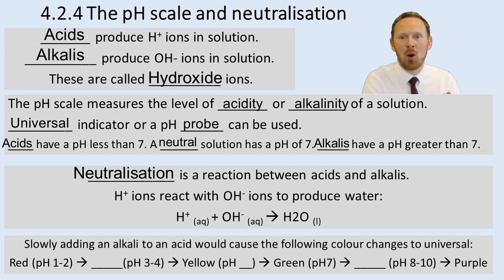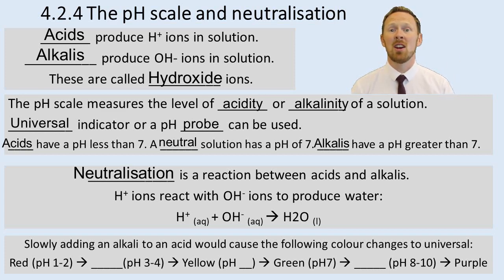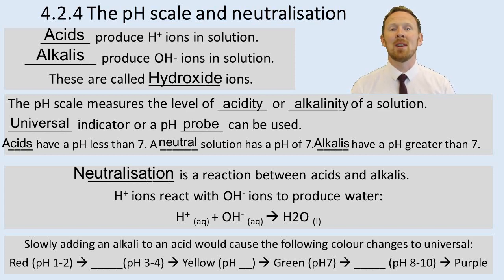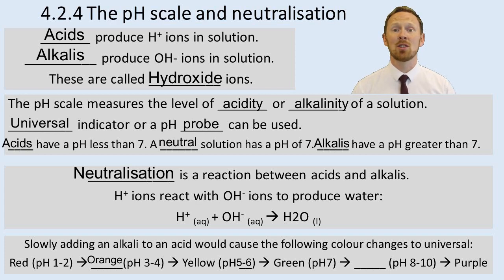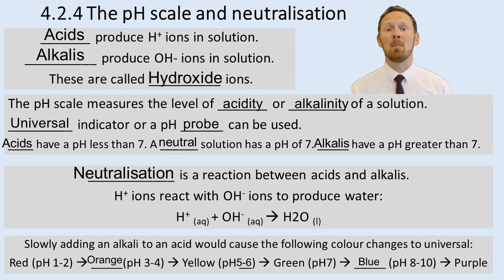If you slowly add an alkali to an acid, you get the full range of colour changes. Starting with a strong acid at pH 1, the indicator is red. Adding more alkali changes it to orange, then yellow, then green — which is neutral, where the concentration of H plus ions equals the concentration of OH minus ions. Continuing to add OH minus ions gives blue, and then purple for a concentrated alkali.